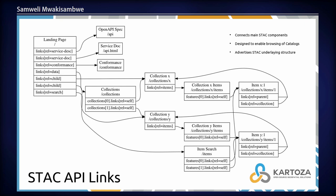Among the STAC components, we also have the STAC API. The basic functionality of the STAC API is to link in a dynamic way the catalog, the collection, and the item, so that users can find a more structured way of accessing the catalog. STAC API achieves this by providing endpoints to each of the STAC components — catalog, collection, and item.